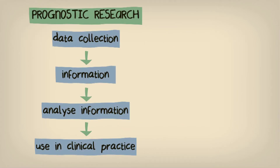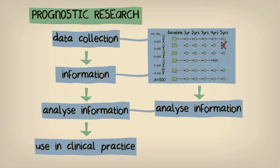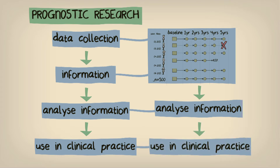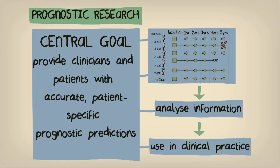We have a wealth of information available, but before we discuss how to analyze this information, we should remind ourselves of the aim of our study. Remember, in prognostic research the goal is to provide clinicians and patients with accurate, patient-specific prognostic predictions, and the end result should be an absolute value that clinicians give to their patients and use to make decisions. How can we provide clinicians with a means of reaching these predictions based on the information we have collected in our study?